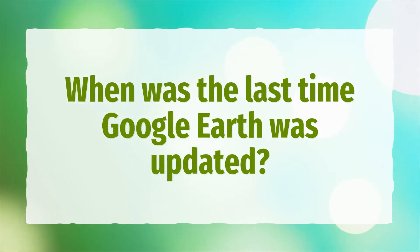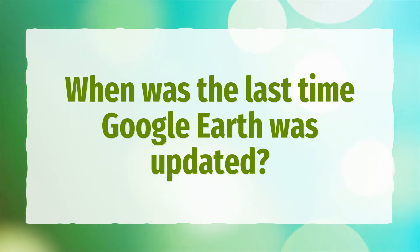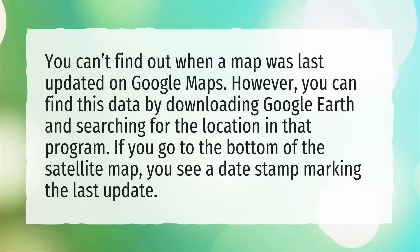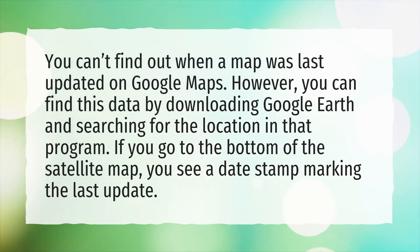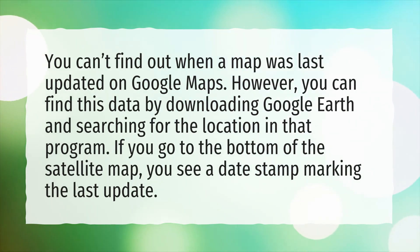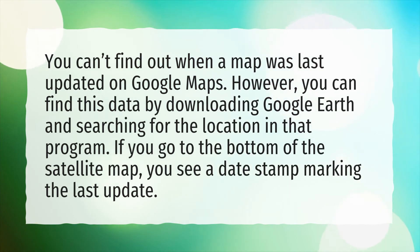When was the last time Google Earth was updated? You can't find out when a map was last updated on Google Maps. However, you can find this data by downloading Google Earth and searching for the location in that program. If you go to the bottom of the satellite map, you will see a date stamp marking the last update.